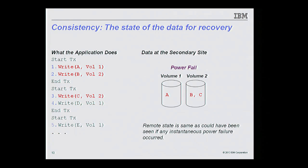The second type of consistency is power-fail consistency. Here the state of data at the recovery site is one that could have occurred had there been an instantaneous power failure at the primary site. Most serious applications know how to recover from a power outage, so this is a state most applications can handle — though it may take time, as databases may need full log replay and file systems may need checks.